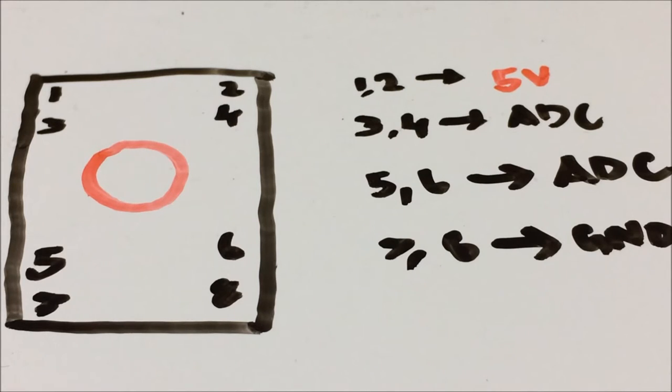This gives the supply voltage for the working of the joystick. The red circle at the center of the pin diagram is the knob or the controlling knob or the joystick. Now pin number 3, 4, 5, and 6 gives the analog output values based on the direction in which you move the knob.